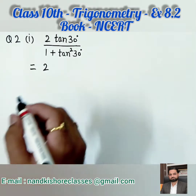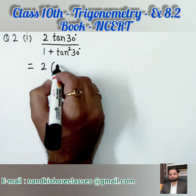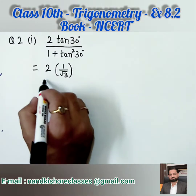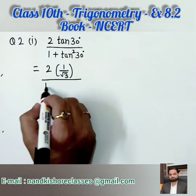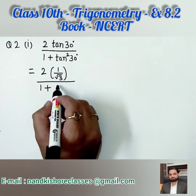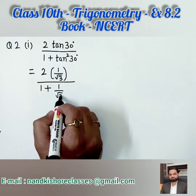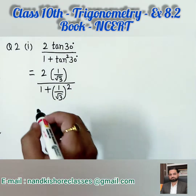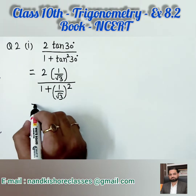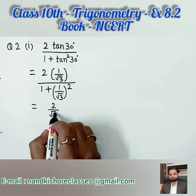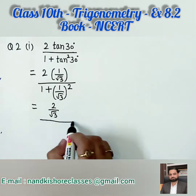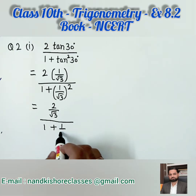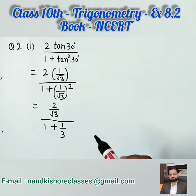What is the value of tangent 30 degrees? Tangent 30 degrees is 1 by root 3. So we have 2 times (1 by root 3) over 1 plus (1 by root 3) squared. It becomes 2 by root 3 upon 1 plus 1 by 3, because root 3 squared is 3.